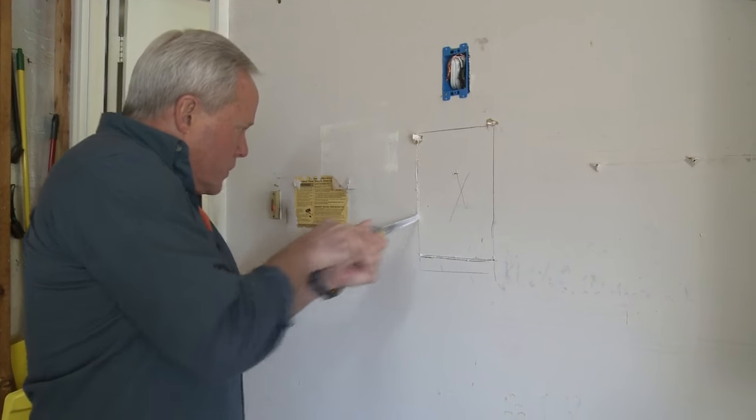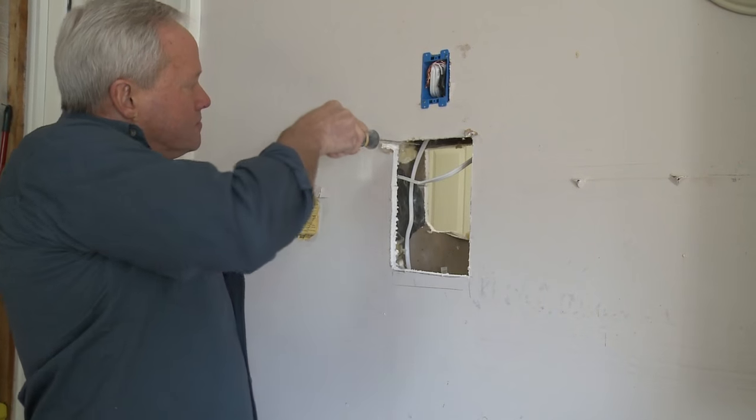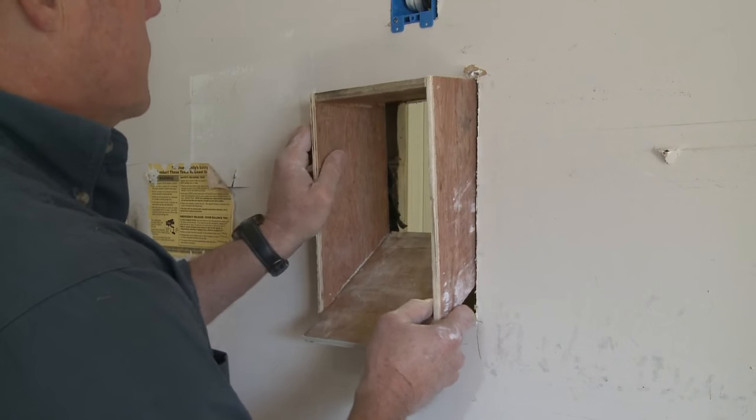The holes in the drywall on the garage side are cut to match the larger end of the chutes so they can be fished into the wall from that side.